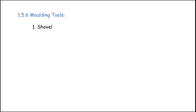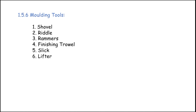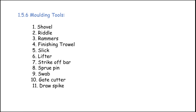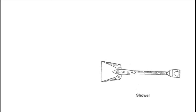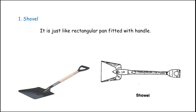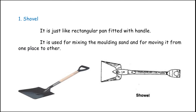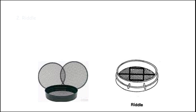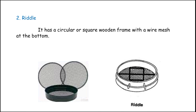The molding tools used for molding are: shovel, riddle, rammer, finishing trowel, slick, lifter, strike-off bar, sprue pin, swab, gate cutter, draw spike, vent rod, and finally mallet. These are the main molding tools. Now we will see them one by one in detail. The first one is the shovel — it is just like a rectangular pan fitted with a handle. It is used for mixing the molding sand and for moving it from one place to another.